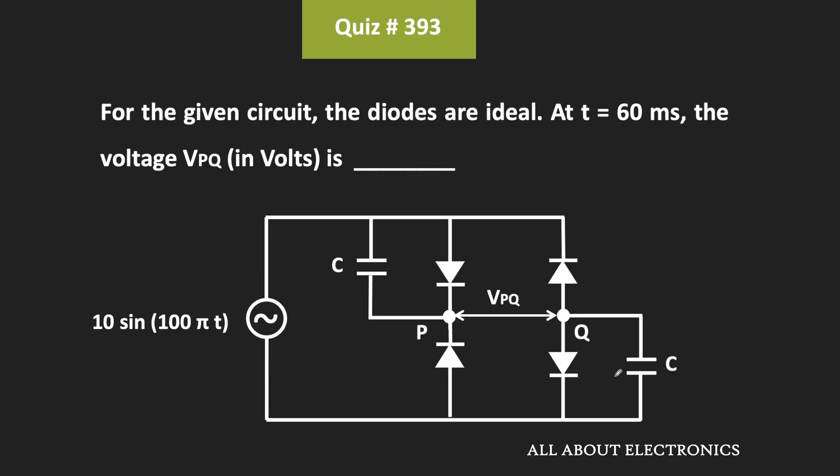Hey friends, welcome to the YouTube channel All About Electronics. In this question, we have been asked to find the voltage between the two nodes P and Q at time t equal to 60 milliseconds, and here all the diodes are ideal diodes.